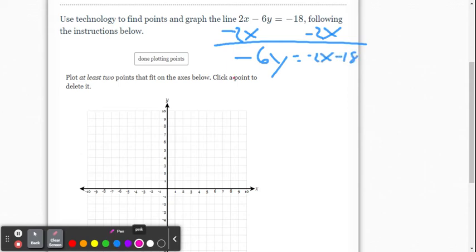Equals negative 2x minus 18. So now we want 1y. So we're going to divide by negative 6, division property of equality. And what you do to one side, you must do the other. And we're going to divide every part by that negative 6.